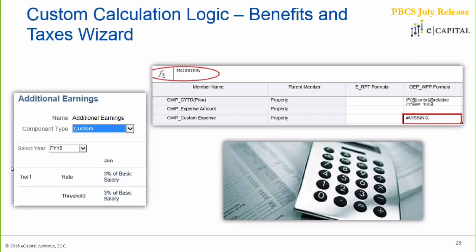One use case would be if you're looking at your current fiscal year bonus schedule — say you only want bonuses to apply to employees who were hired before the midpoint of the last fiscal year. This is something you'd be able to define custom conditional logic for within that member formula, and have that then apply to your additional earnings schedule.